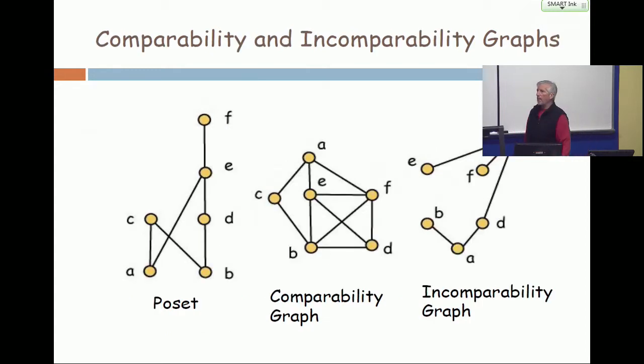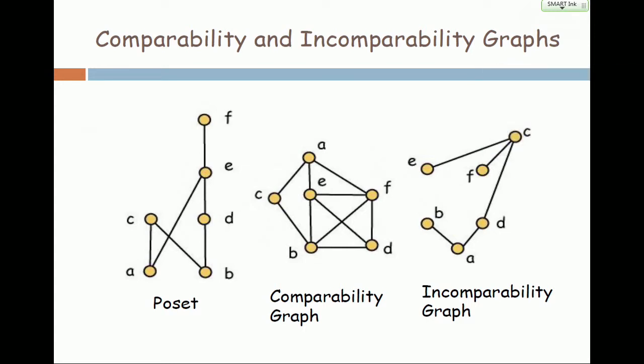We also talked about comparability graphs and the complements in comparability graphs. So given a poset, you can form a graph on the same vertex set by saying two points are adjacent if and only if they're comparable. And when you take the complement of that and exchange edges for non-edges and vice versa, you get the incomparability graph. Now, it's worth studying this slide carefully to make sure that you understand what's going on in this.